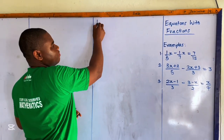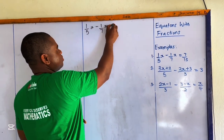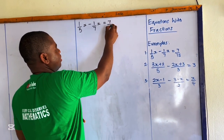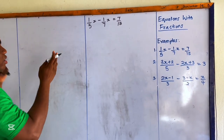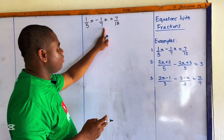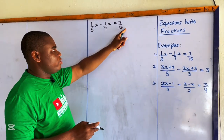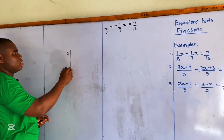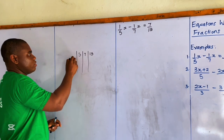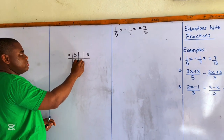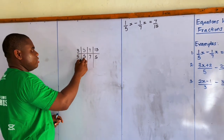The first question is: 1 over 5x minus 1 over 7x equals 7 over 15. We are going to find the LCM of the denominators — 5, 7, and 15 — so we can multiply all three terms by the LCM. Using prime factors: 3 goes into 15 five times, leaving 1, 7, and 1.